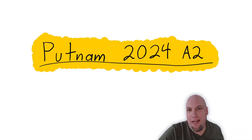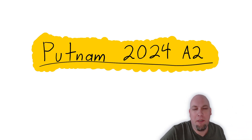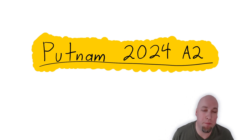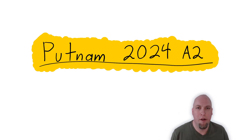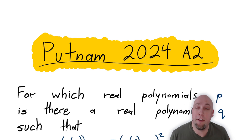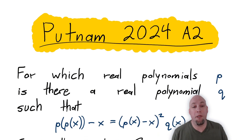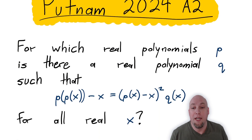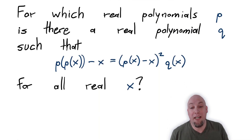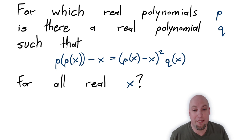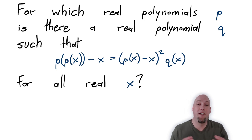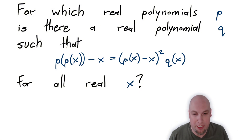Hey folks, my name is Nathan Johnston, and I want to talk to you about problem A2 on this year's 2024 Putnam competition. This problem is about polynomials. It asks for which polynomials p does there exist a real polynomial q such that p(p(x)) minus x equals (p(x) minus x) squared times q(x) for all real inputs x.